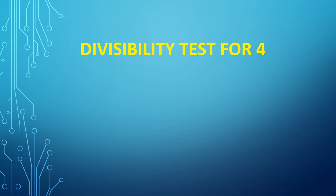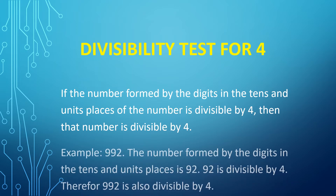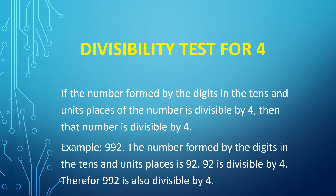Divisibility test for 4: if the number formed by the digits in the tens and units places of the number is divisible by 4, then that number is divisible by 4. For example, 992 — the number formed by the tens and units place is 92. So if 92 is divisible by 4, then the entire number, 992, is also divisible by 4.